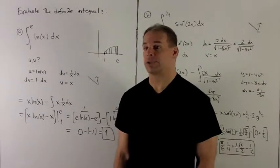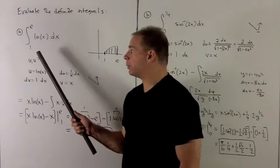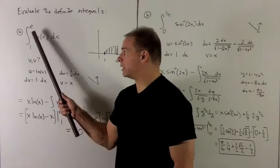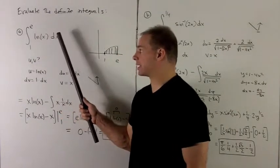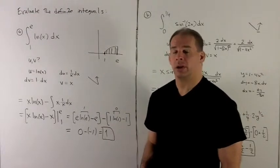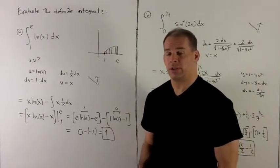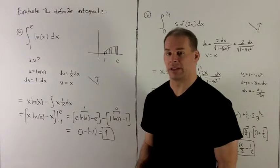Evaluate the definite integrals. For the first one, we're going to integrate from 1 to E over natural log of x dx. If you note here, we only have one function, so the way I get around that to use integration by parts is to let the other function be equal to 1.